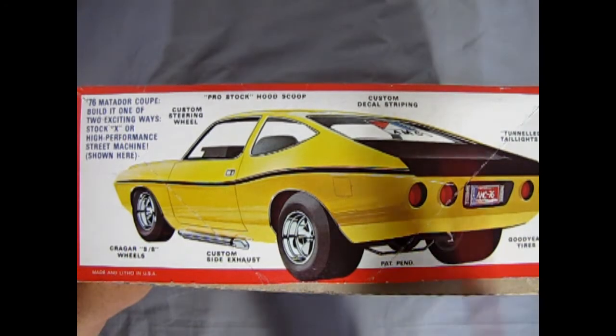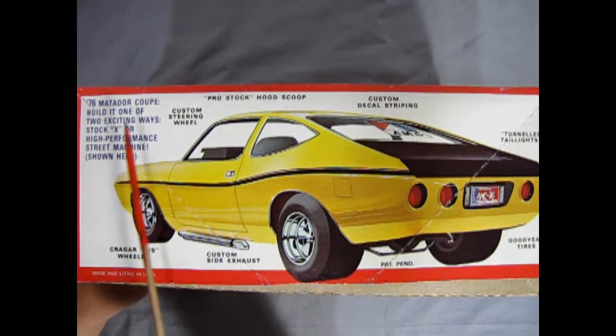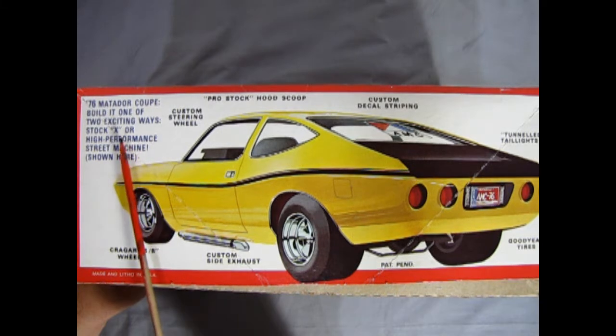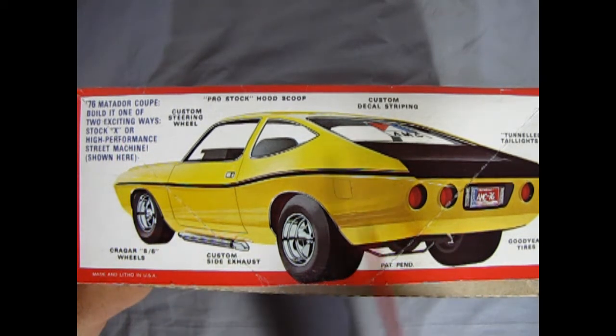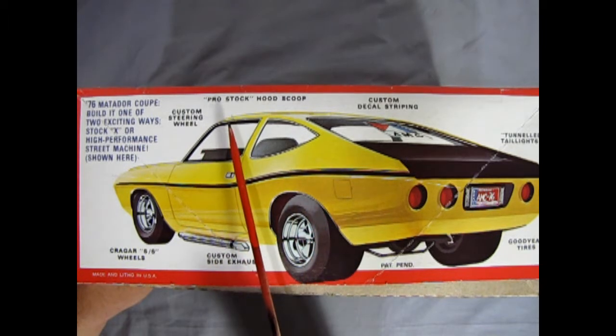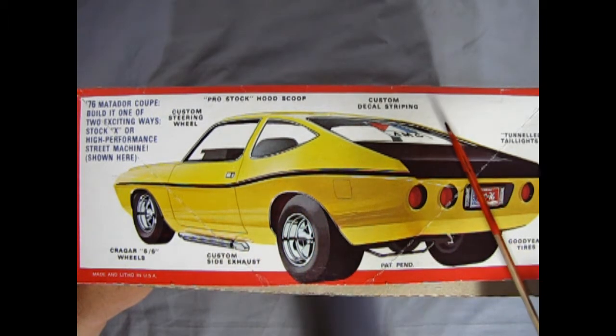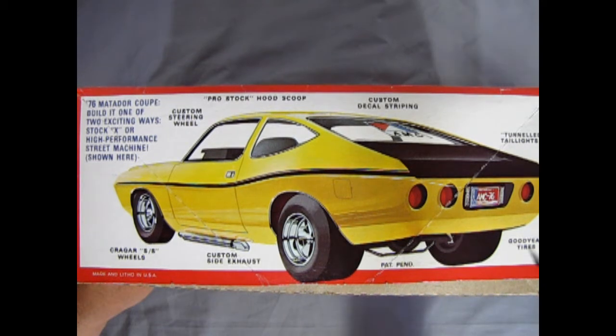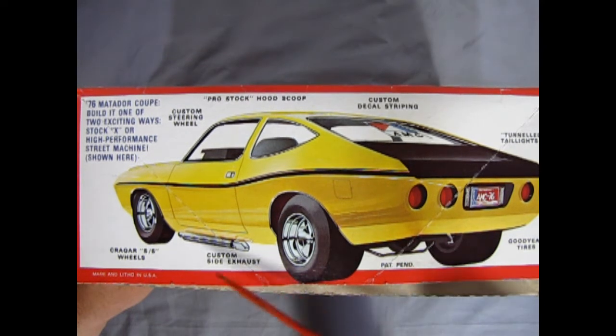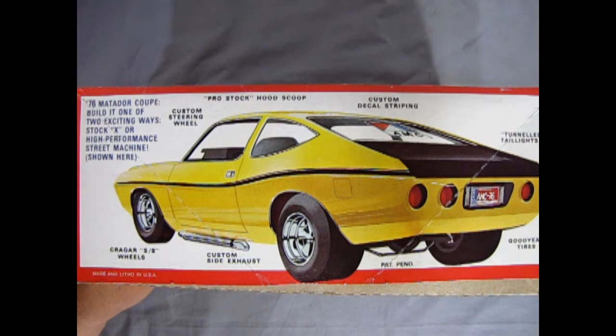As we turn to the side of the box we see it says 76 Matador Coupe. Build it one of two exciting ways: Stock X or high-performance street machine shown here. Get a custom steering wheel, Pro stock hood scoop, custom decal striping, tunneled taillights, Goodyear tires, custom side exhaust and Cragar SS wheels.